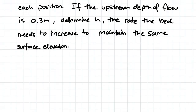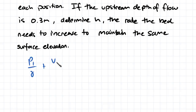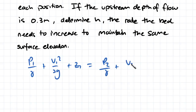First, we write Bernoulli's equation for this problem. We have flow from one point to another, so the flow must satisfy Bernoulli's equation: pressure divided by unit weight, plus velocity squared divided by two times gravity, plus elevation head, equals the same terms at point two. There is no head loss in this system.